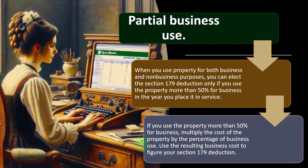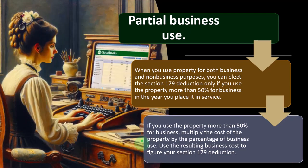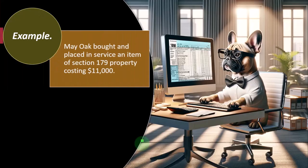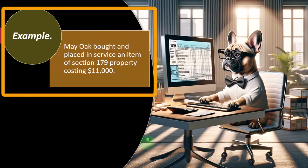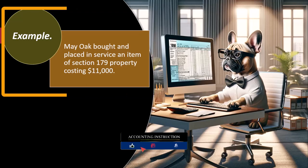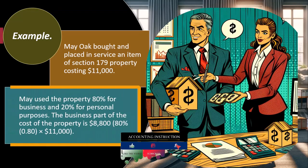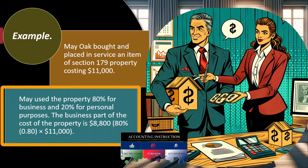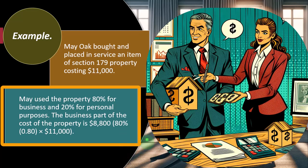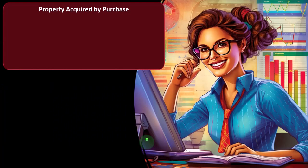Use the resulting business cost to figure your Section 179 deduction. Example: May Oak bought and placed in service an item of Section 179 property costing $11,000. May used the property 80% for business and 20% for personal. That clears the 50% threshold, so we should be able to do the 179. The business part of the cost of the property is $8,800, which is 80% of $11,000.